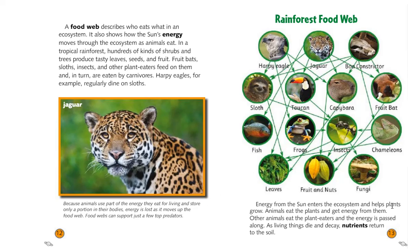Energy from the sun enters the ecosystem and helps plants grow. Animals eat the plants and get energy from them. Other animals eat the plant eaters and the energy is passed along. As living things die and decay, nutrients return to the soil and the cycle starts anew. At the bottom of the food chain we have the producers — leaves, fruits, and nuts — which are eaten by herbivores such as chameleons, insects, and frogs, which are eaten by top predators like the harpy eagle, the jaguar, and the boa constrictor. When any one of them dies, they decompose and go back into the soil, helped along by fungi.